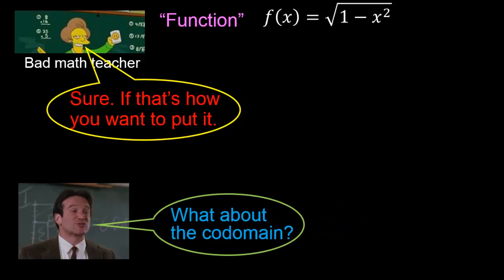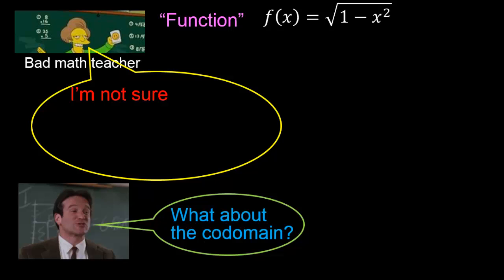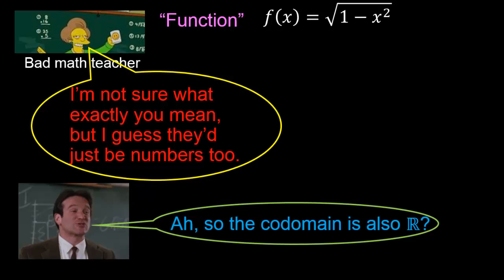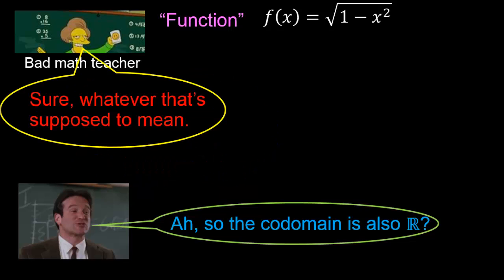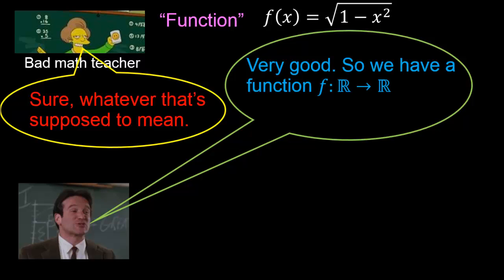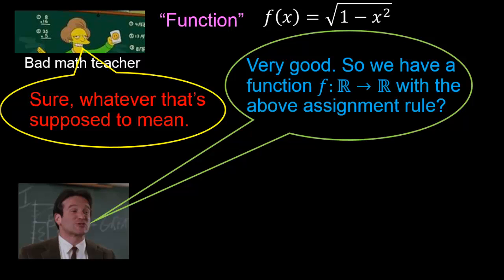And what about the co-domain? I'm not sure what exactly you mean, but I guess they must just be numbers too. So you mean to say that the co-domain is also the set of real numbers. Sure, whatever that's supposed to mean. Very good. So we have a function f with domain ℝ and co-domain ℝ, with the above formula as the assignment rule.